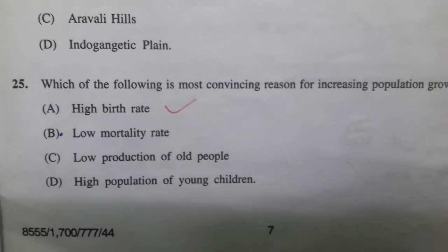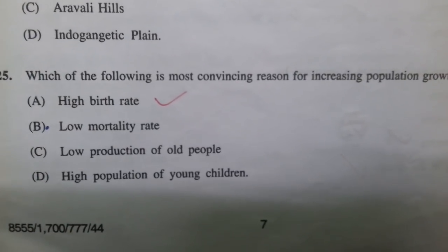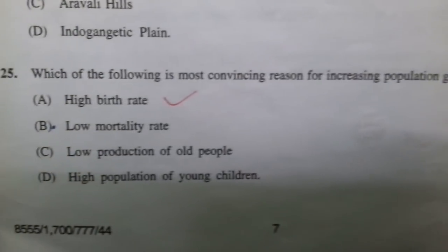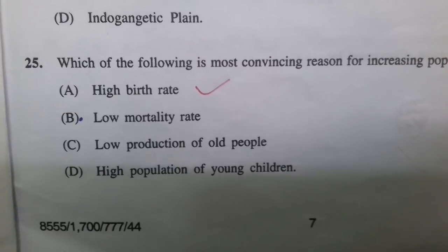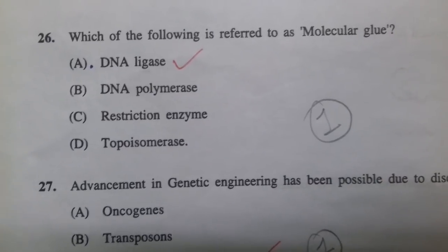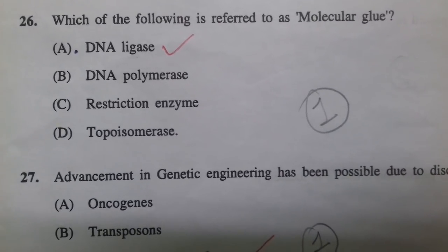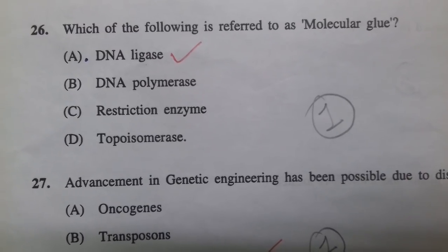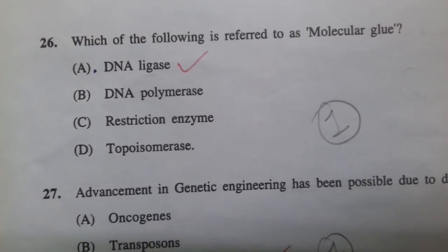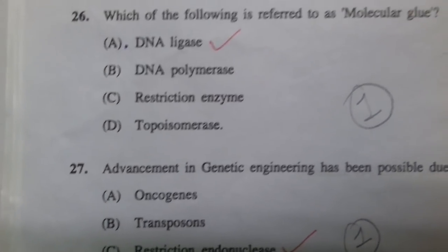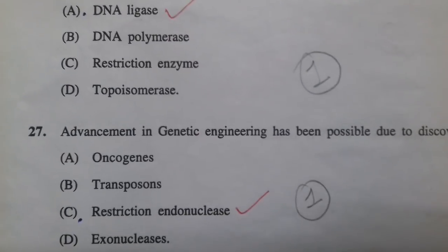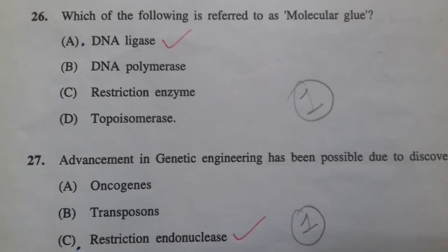The most convincing reason for increasing population growth in a country is a high birth rate — I had incorrectly marked low mortality rate. The term 'molecular glue' refers to DNA ligase. The enzyme 'molecular scissors' refers to restriction endonucleases. Please focus on the nicknames given to these enzymes.